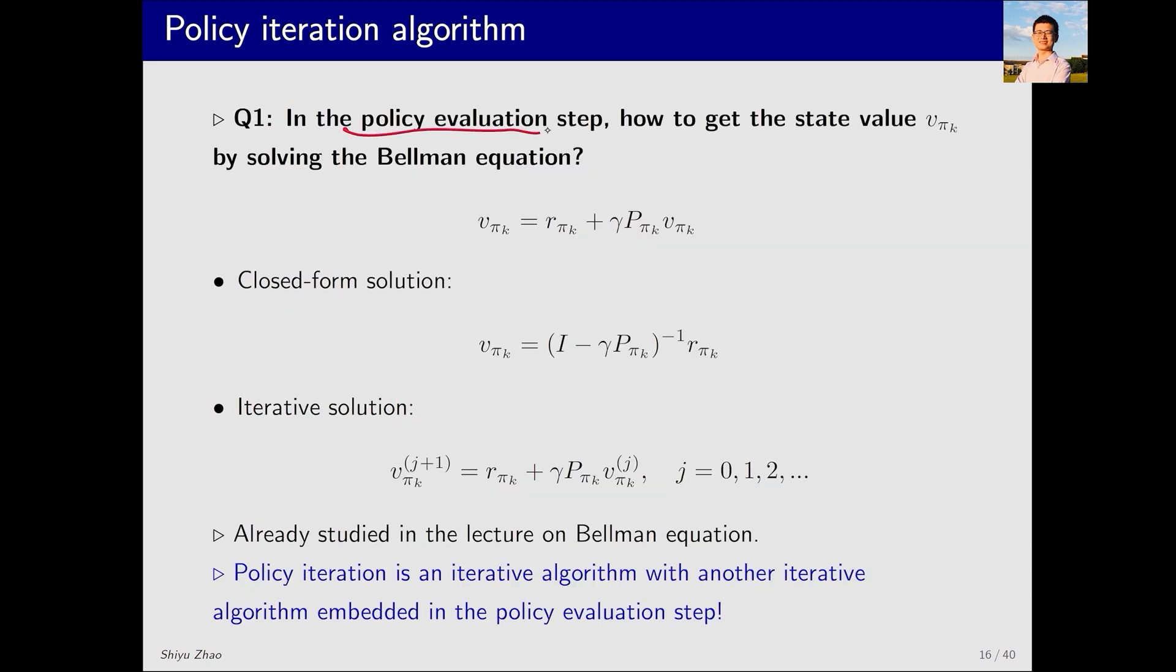For the first question in the policy evaluation step, how to get the state value? Actually, we've already introduced this in detail when discussing the Bellman equation. That is, assuming πk is given, we can write out its Bellman equation and solve its state value. There are two methods. The first is the closed-form solution. If you're not familiar, you can revisit it in the previous lectures. Second, we don't often use the closed-form solution because it involves solving a matrix inverse. We usually use an iterative solution. We start with a guess for vπk and iterate until we gradually reach the true value of vπk. It's important to note that policy evaluation is an iteration algorithm with another iterative algorithm embedded in the policy evaluation step. So, it's a large iterative algorithm that involves a smaller iterative algorithm.